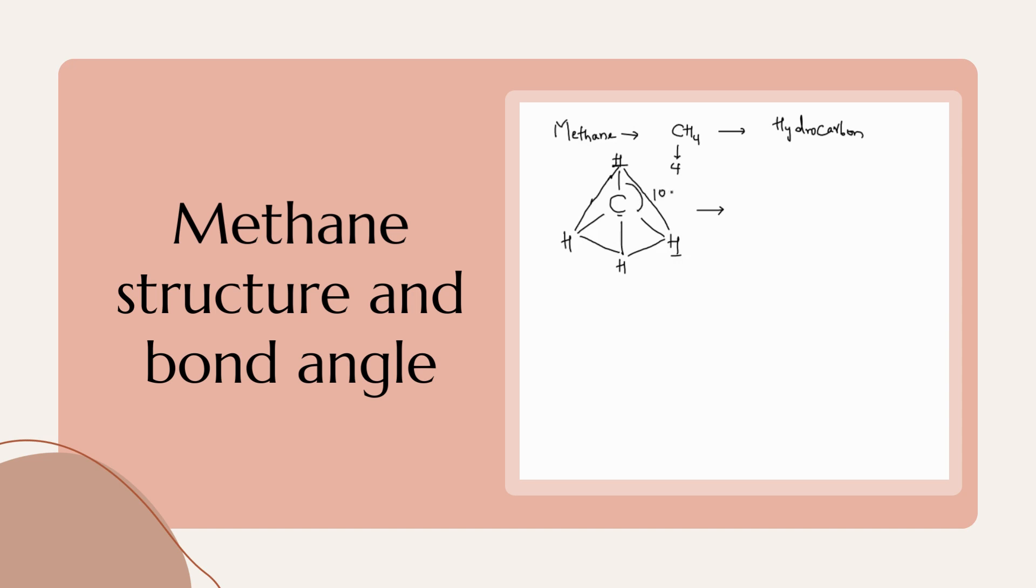So this bond angle and the shape or geometry is obtained from carbon's hybridization which is sp3. According to this hybridization, around the carbon four hydrogens are occupying four different corners and the bond angle is 109 degrees 28 minutes and the geometry is tetrahedron. Thank you.